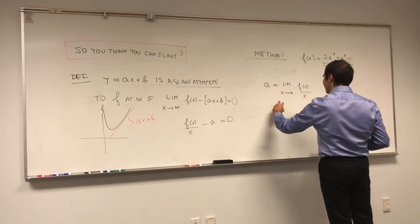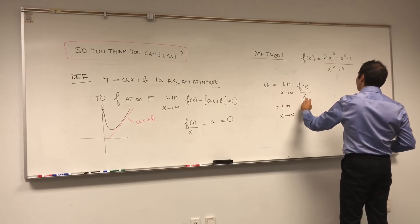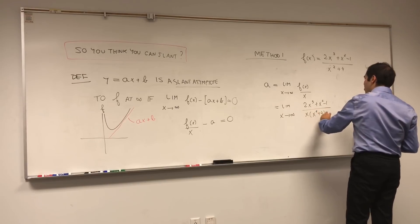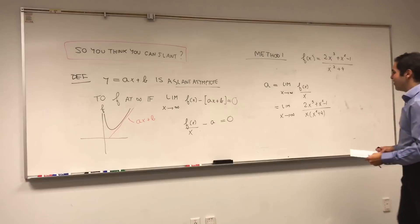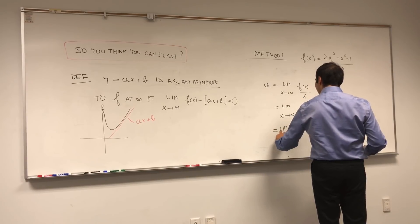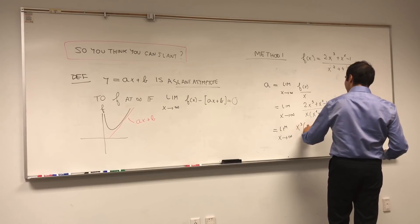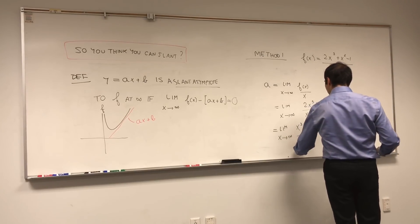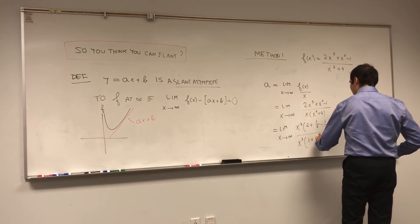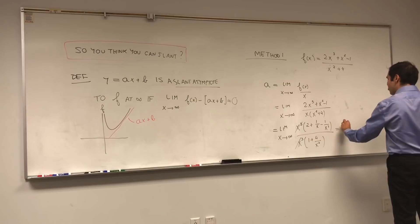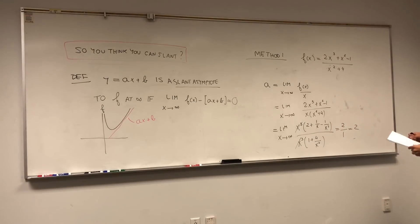That equals the limit as x goes to infinity of (2x³ + x² − 1) over x times (x² + 4). Because we're dealing with rational functions, it's easier to factor out the highest power. Factoring out x³ gives (2 + 1/x − 1/x³) over x³ times (1 + 4/x²). The x³ terms cancel, those terms go to zero, and you're left with 2 over 1, which is 2. So the slope of the slant asymptote equals 2.